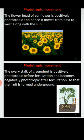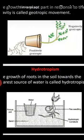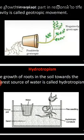Next is geotropic movement. The movement of plants towards or away from Earth's gravity is called geotropism. 'Geo' refers to gravity, 'tropism' means movement or development.